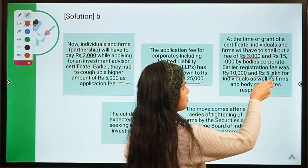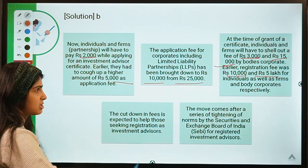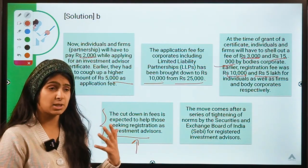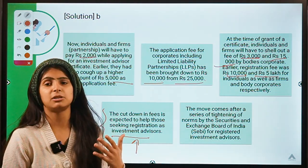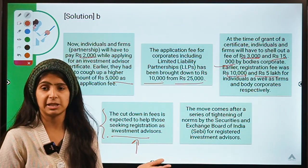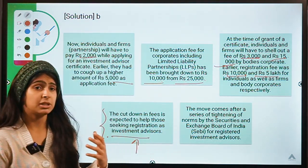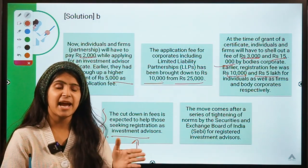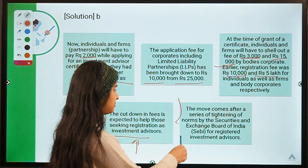For corporates, the application fee was earlier twenty-five thousand; now it is ten thousand. For the registration fee, earlier individuals had to pay ten thousand; now it has been reduced to three thousand. For body corporates, it was five lakh and now it has been reduced to fifteen thousand. This fee reduction is meant to support investment advisors so that more people register as investment advisors. The benefit of getting them registered is that they are controlled by the regulators — their records are with the regulators and in case they do anything wrong, the regulator can easily catch them.